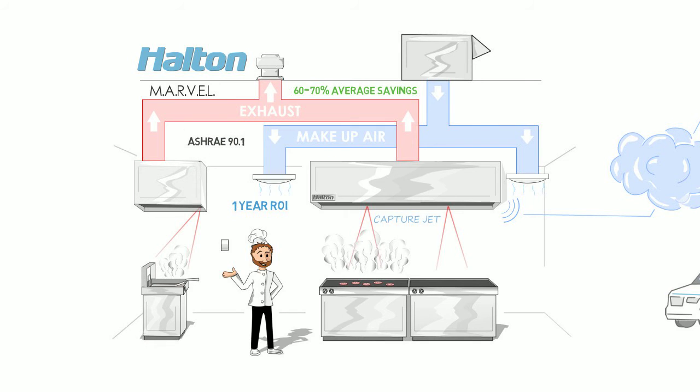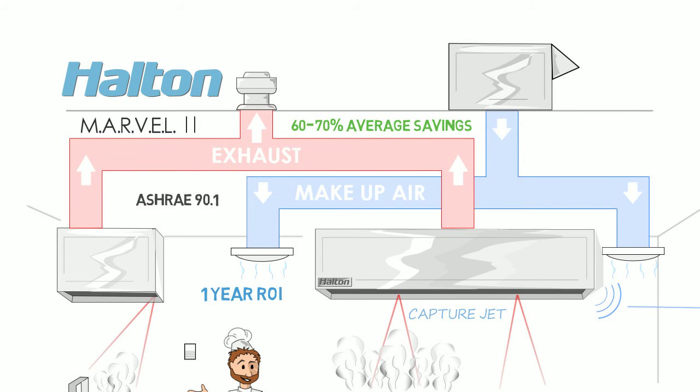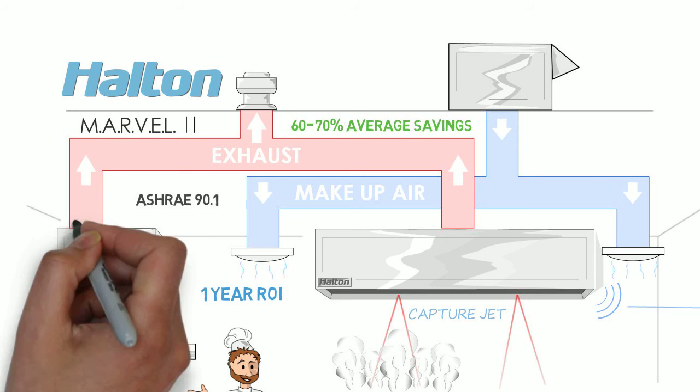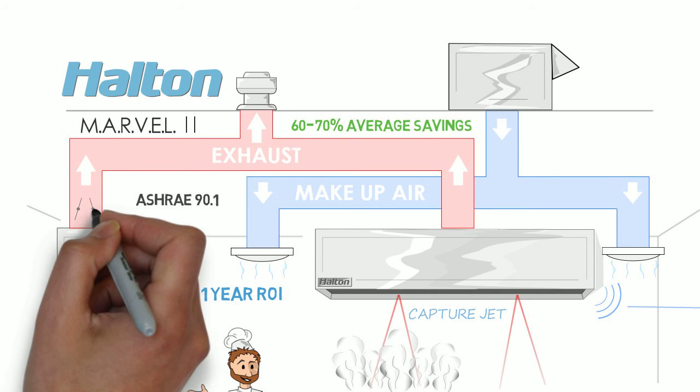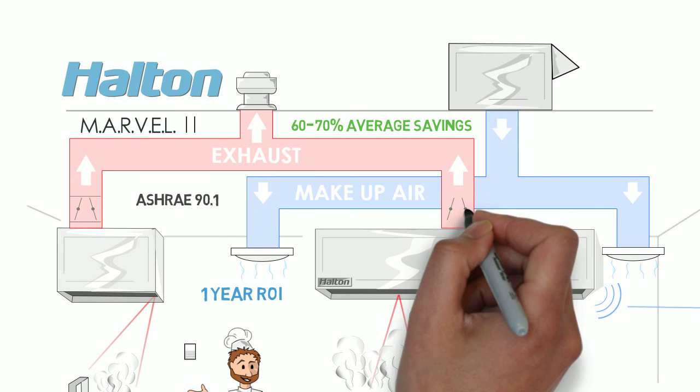Now, if you've got a larger facility with multiple hoods, Halton's Marvel 2 system offers you all the capability we just described, but integrates balancing dampers with a single fan duct configuration utilizing their exclusive real-time measurement of exhaust airflow.